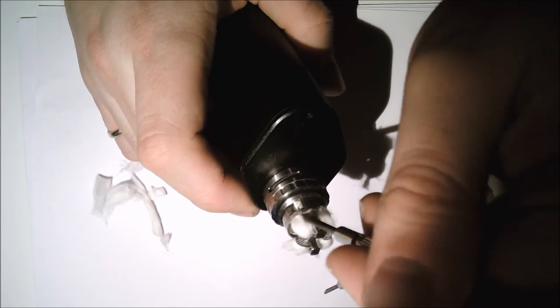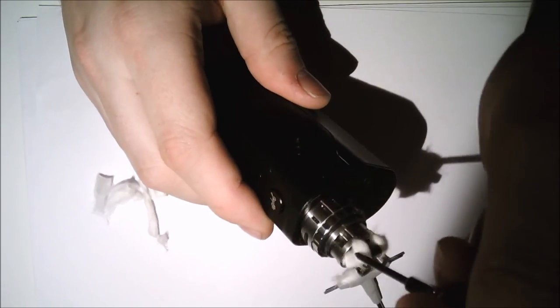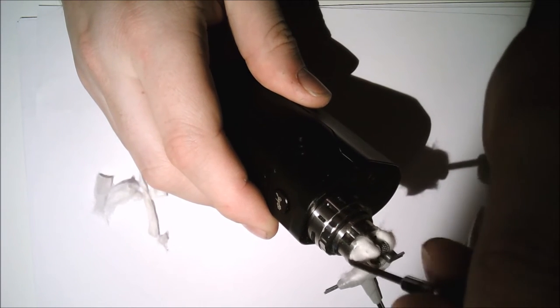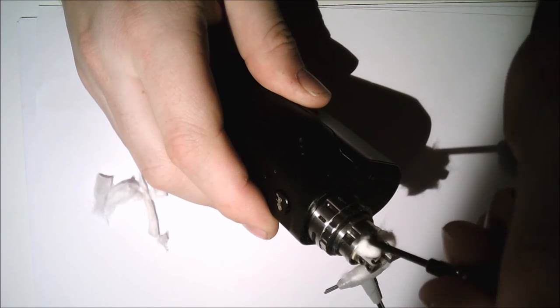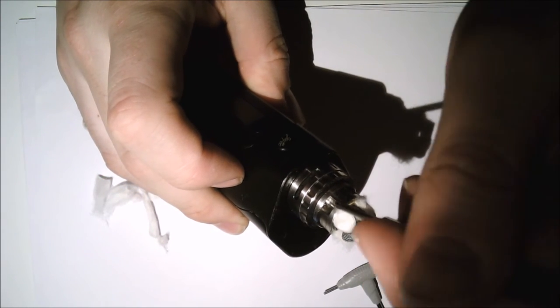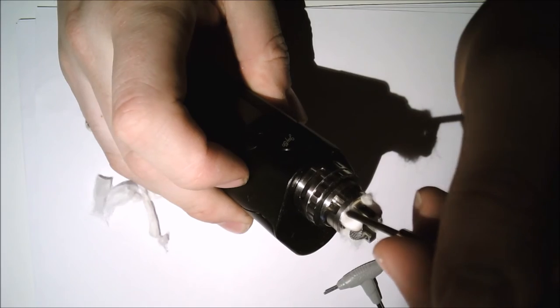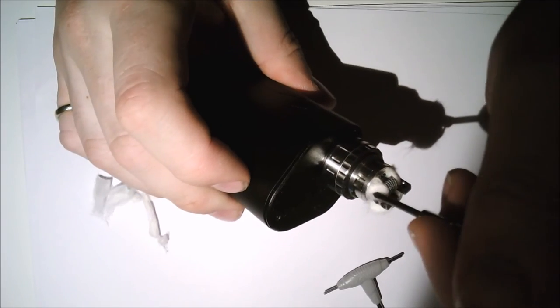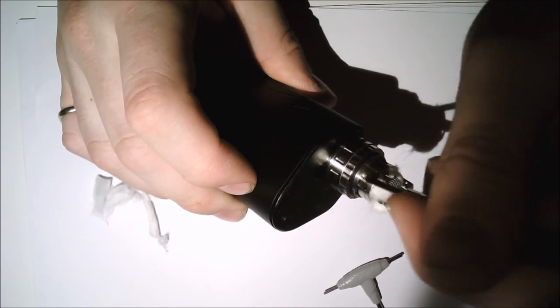And then what we just do is we pop them so that they are not in the juice flow channels, just resting above them. There we go, beautiful. Just poke it down.